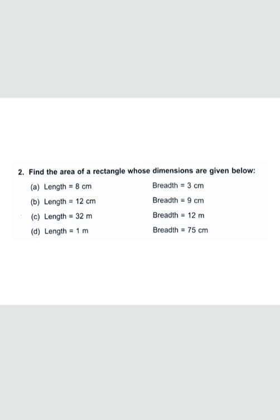Question number two: find the area of a rectangle when two dimensions are given. There are four sub-parts. In part A, length is 8 and breadth is 3, so we multiply 8 by 3 — the answer is 24 square centimeters, since area of a rectangle is length multiplied by breadth.